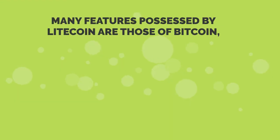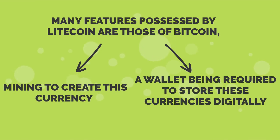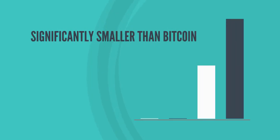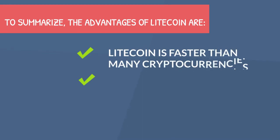Many features possessed by Litecoin are those of Bitcoin, such as mining to create this currency, and a wallet being required to store these currencies digitally. The market cap of Litecoin is also significantly smaller than Bitcoin, amounting to $13.7 billion. To summarize, the advantages of Litecoin are: Litecoin is faster than many cryptocurrencies, and it has a large volume.